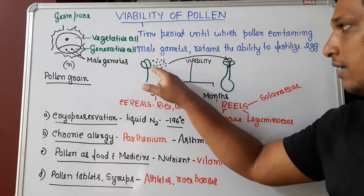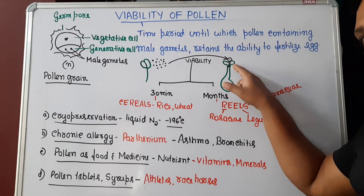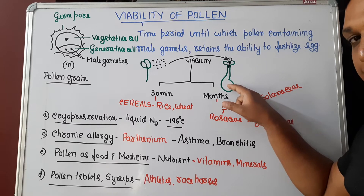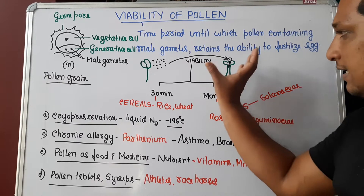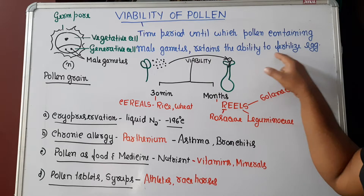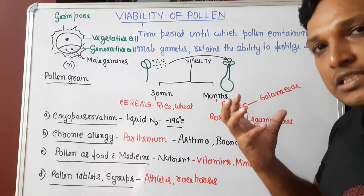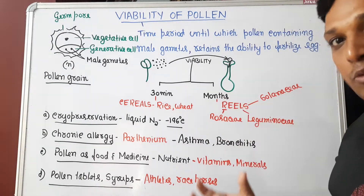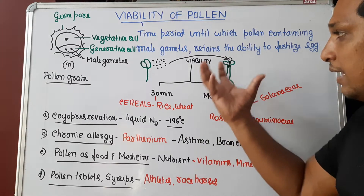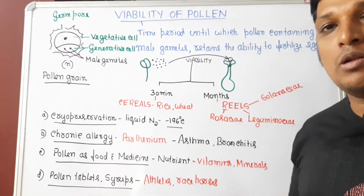Here I have drawn a stamen containing an anther. The anther releases pollen, and this pollen must be deposited on the stigma, then germinate to transfer its male gamete towards the egg for fertilization. The time period until which pollen containing male gametes retains the ability to fertilize the egg is called the viability period.